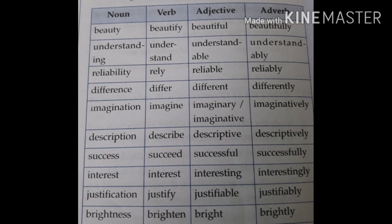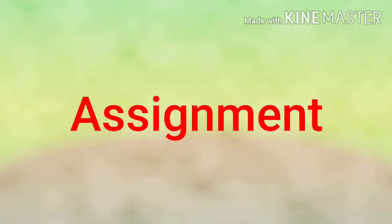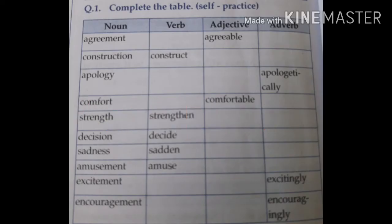In this way, we have seen some examples of word formation. Now I would like to give an assignment for practice. Complete the table — here are given four columns: noun, verb, adjective, adverb. Students, you must complete this table on your own and write all the examples in your classwork. Thank you.